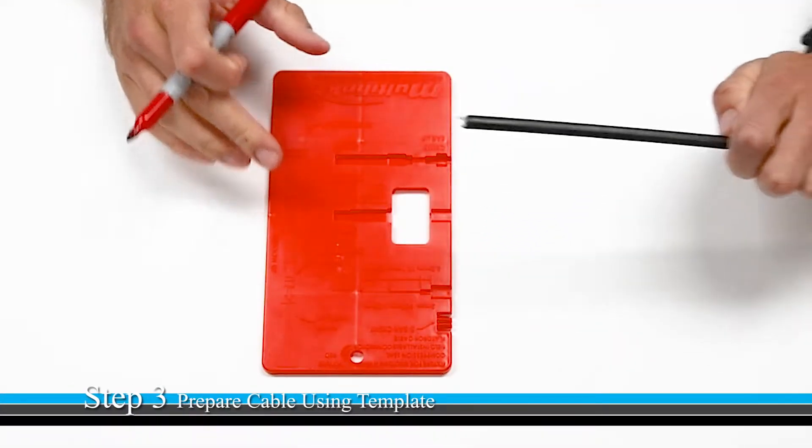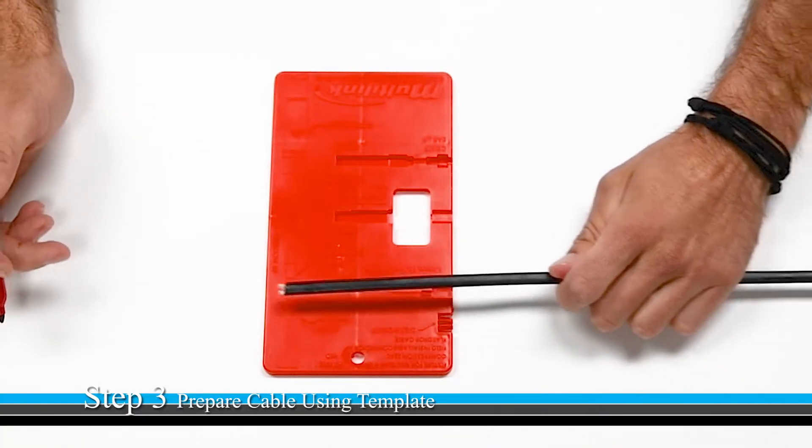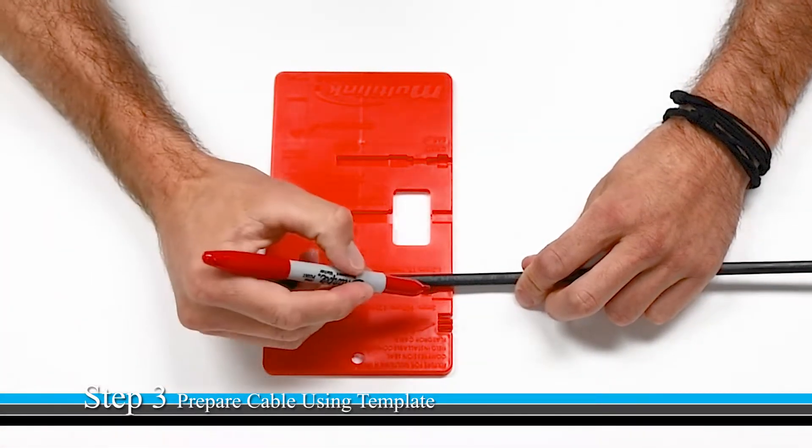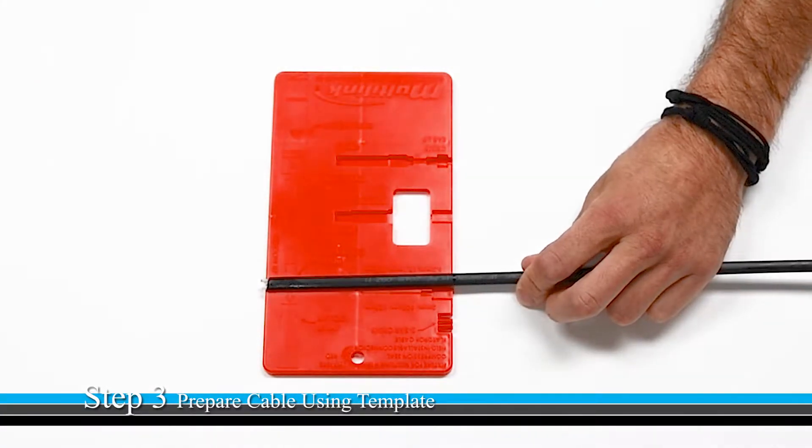To ensure that you have prepped the proper amount of cable for the connector, we suggest about five to six inches of cable length. A good reference point is the width of the Multilink template.